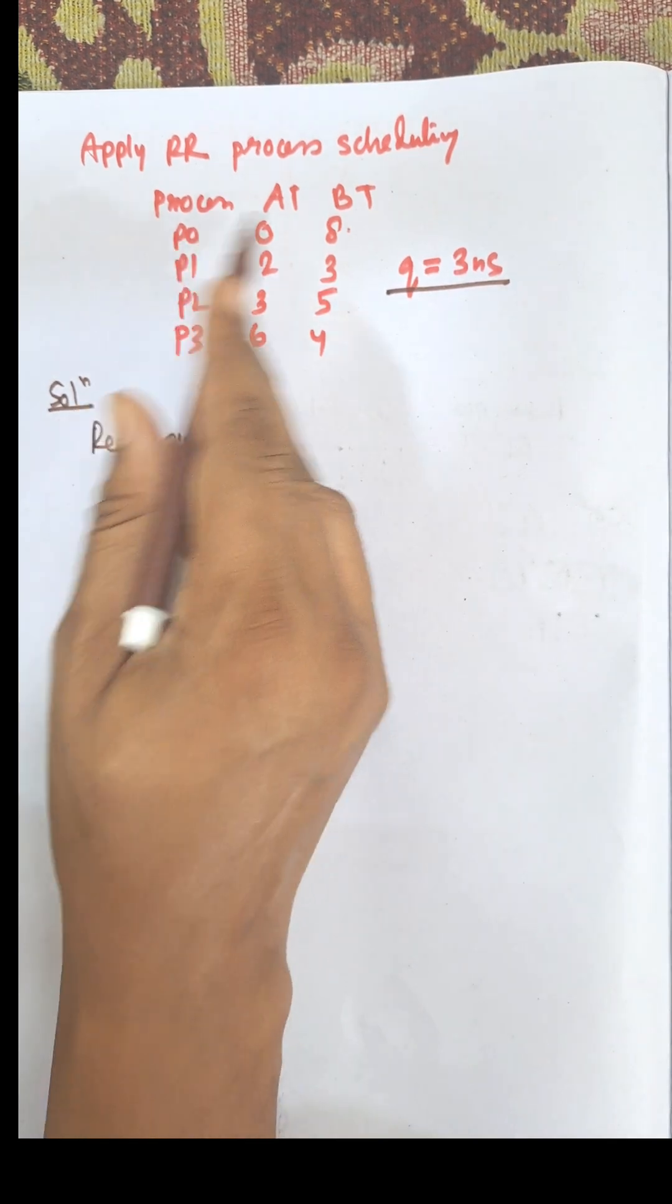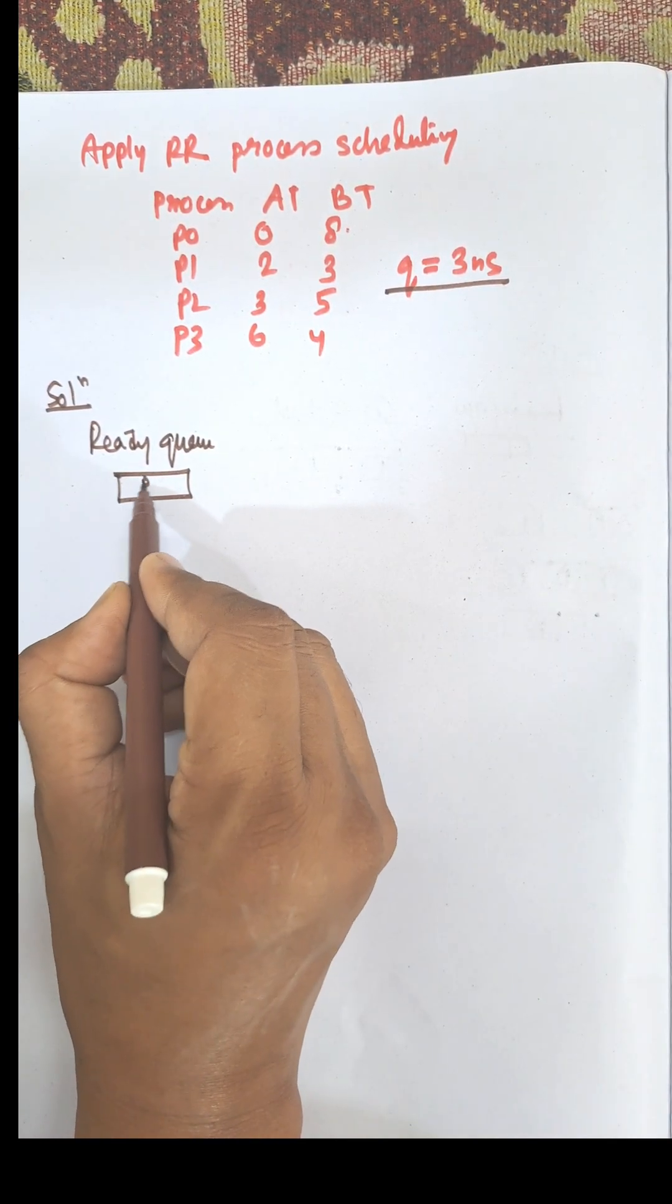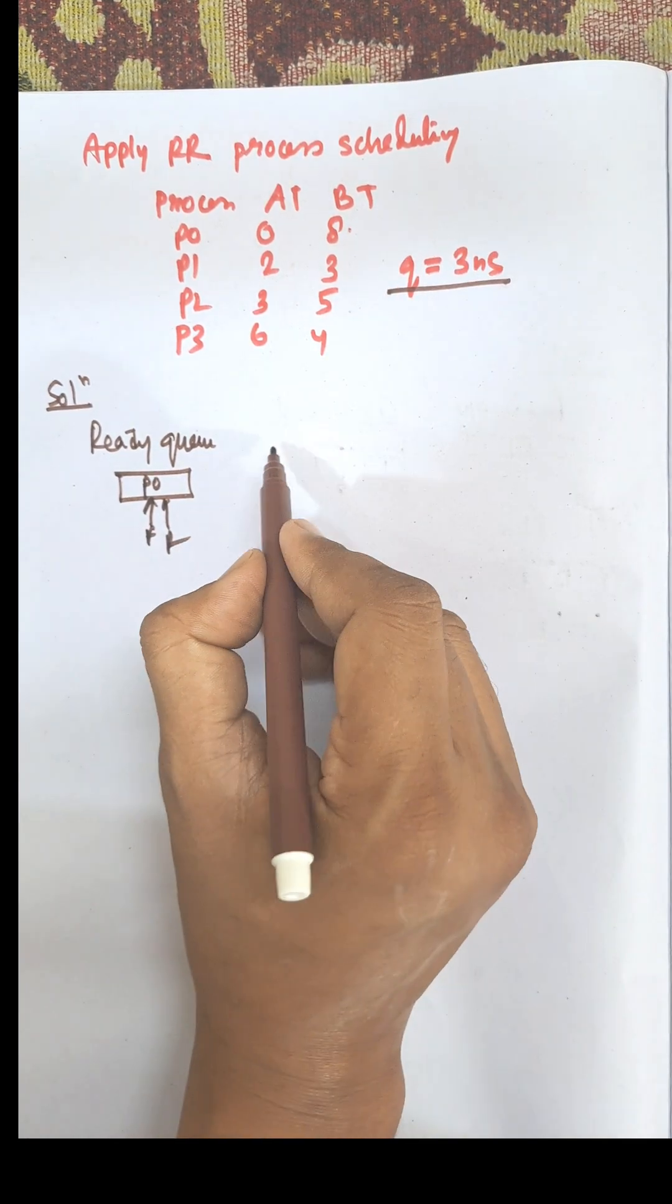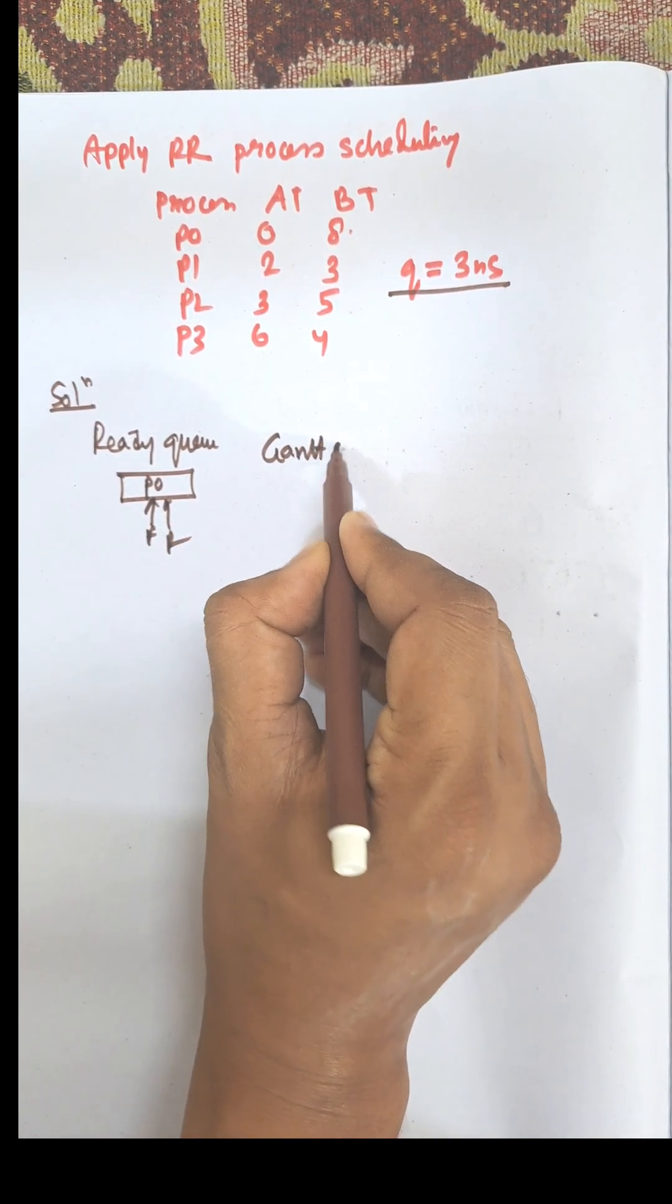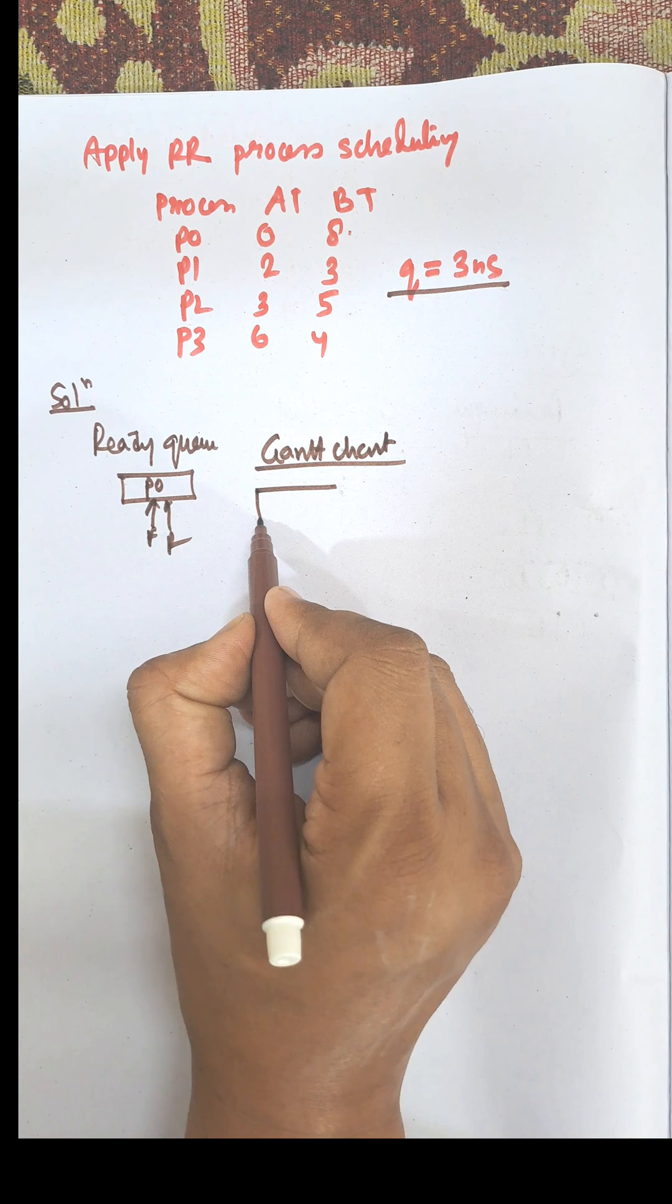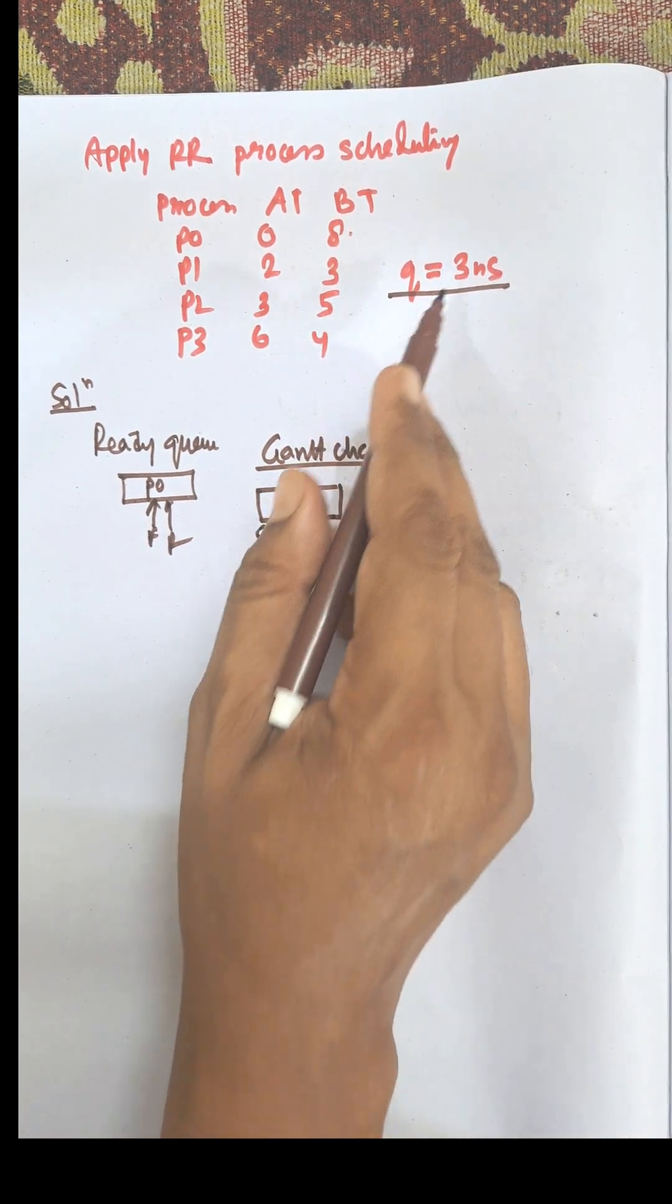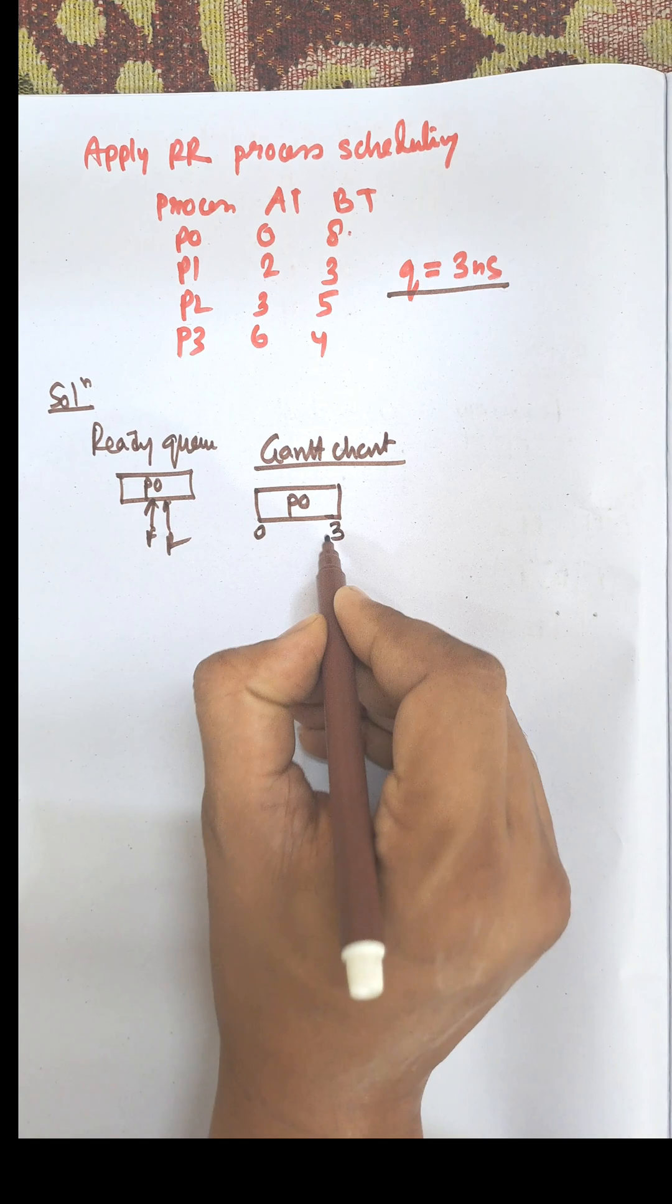Here P0 is the first process to arrive in the ready queue, so P0 will be selected for execution. P0 is executed up to 3 nanoseconds since the quantum time is 3.